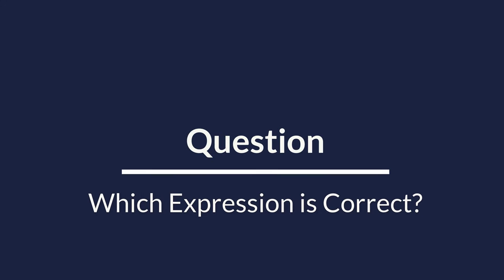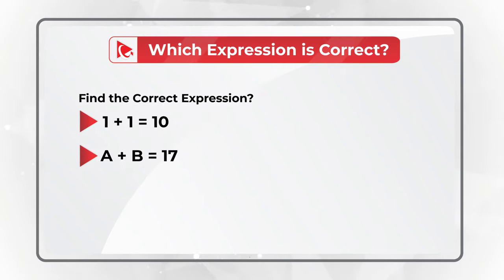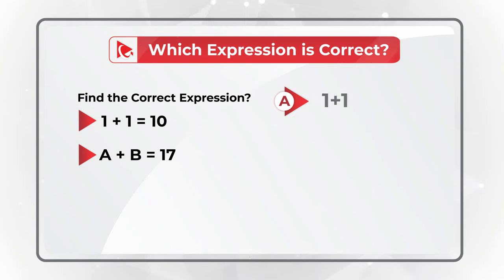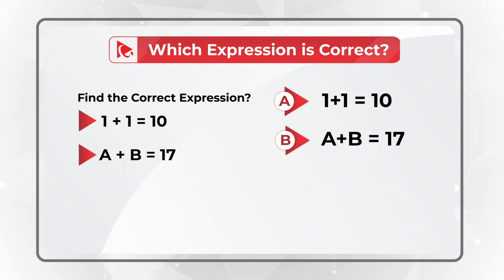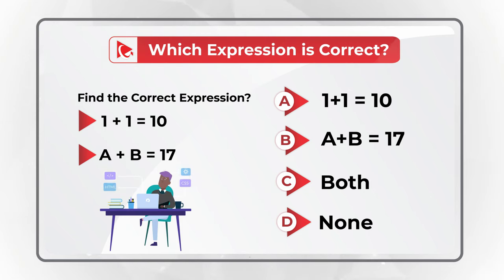Here's a very unusual question frequently used in tests. You need to find the correct expression from these choices: A) 1 + 1 = 10, B) A + B = 17, C) both are correct, or D) none are correct. I'll give you a hint — if you have a degree in computer science it might be easier for you to solve.